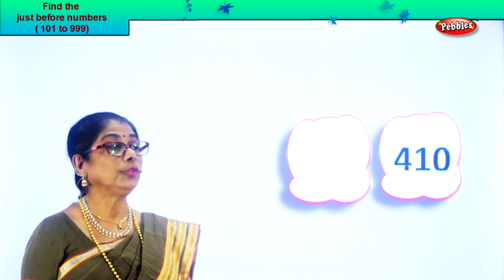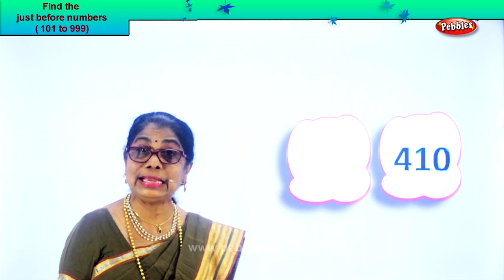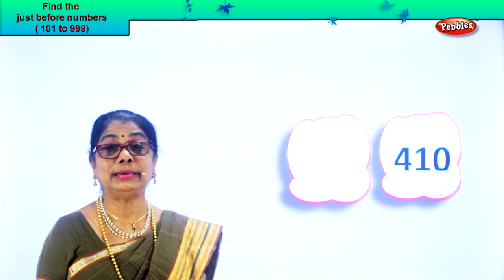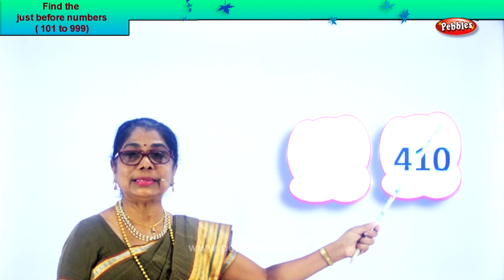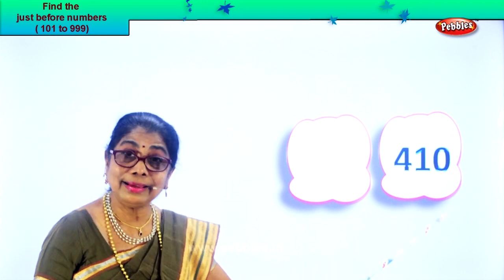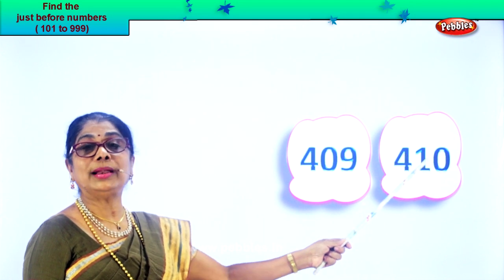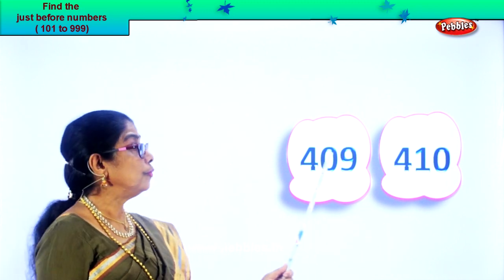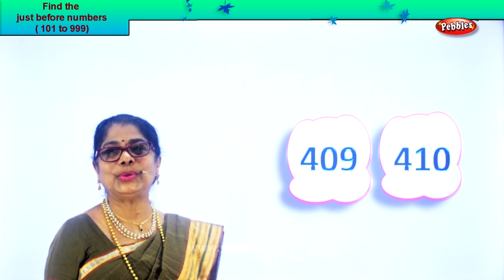Read: four hundred and ten. Zero in the ones place, one in the tens, and four in the hundreds place — four hundred and ten. From zero you cannot subtract. So take the ones and the tens place together — you have ten. One less than ten is nine. So the number before is four hundred and nine. Four hundred and nine, four hundred and ten. Is it interesting?